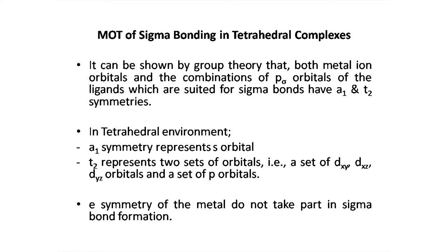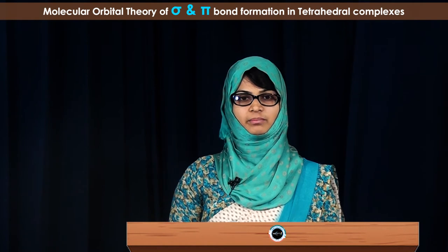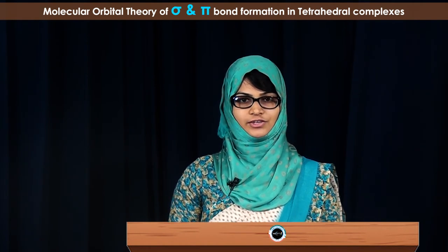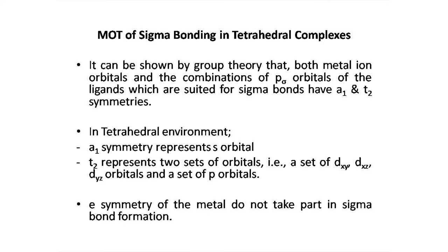When it comes to E symmetry, it refers to only the D orbitals — DX²-Y² and DZ². These four ligands in the case of sigma bond formation can each provide 2 electrons to the metal orbital, giving a total of 8 electrons contributed towards sigma bond formation in tetrahedral complexes. From group theory, the symmetries required for sigma bond formation are A1 and T2.